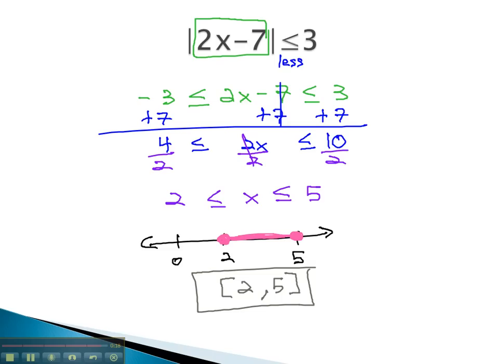An important reminder, when the absolute value is greater, set it up as an or. When the absolute value is less, set up a tripartite inequality, and then solve the remaining compound inequality.